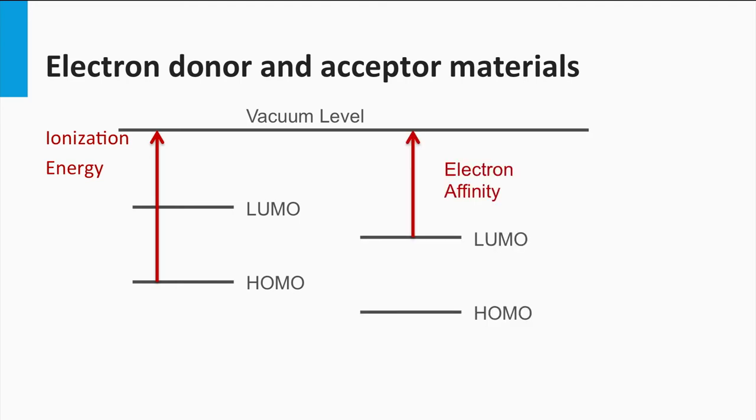The ionization energy is the energy needed to excite an electron from the valence band or HOMO to the vacuum state. The electron affinity is the energy obtained by moving an electron from the vacuum just outside the semiconductor or conjugated polymer to the bottom of the conduction band or LUMO. It means when a molecular material has a low ionization potential, it can with relative ease release an electron out of the material. It can act as an electron donor. When a molecular material has a high electron affinity, it can easily accept an additional electron in the LUMO or conduction band.